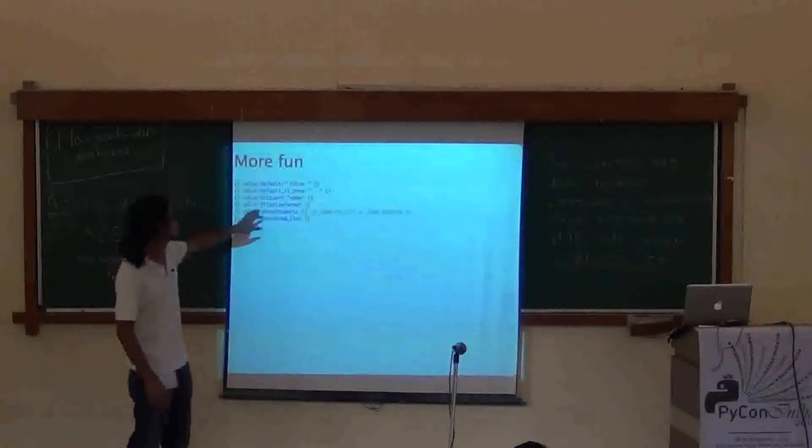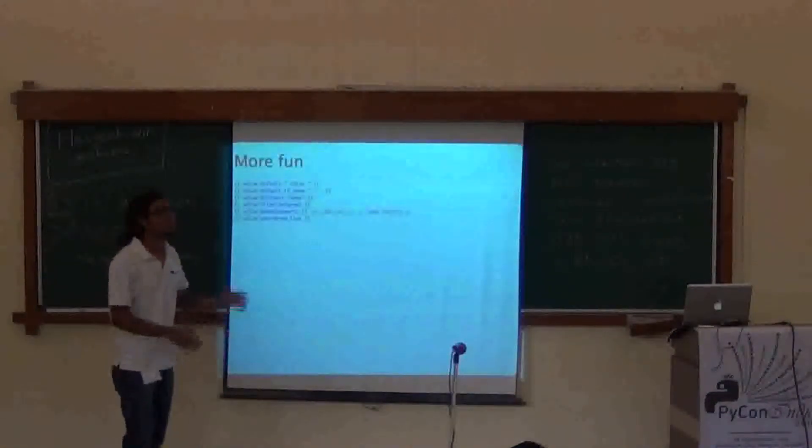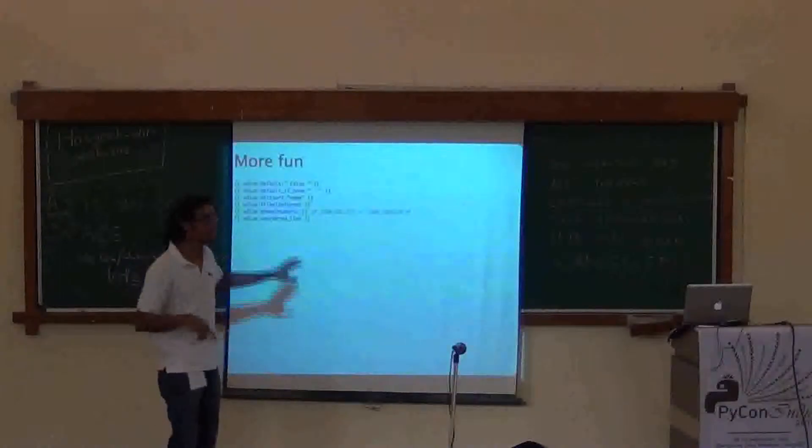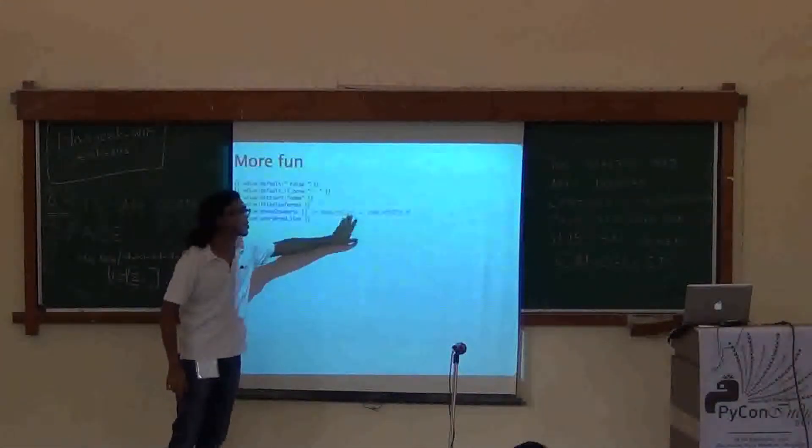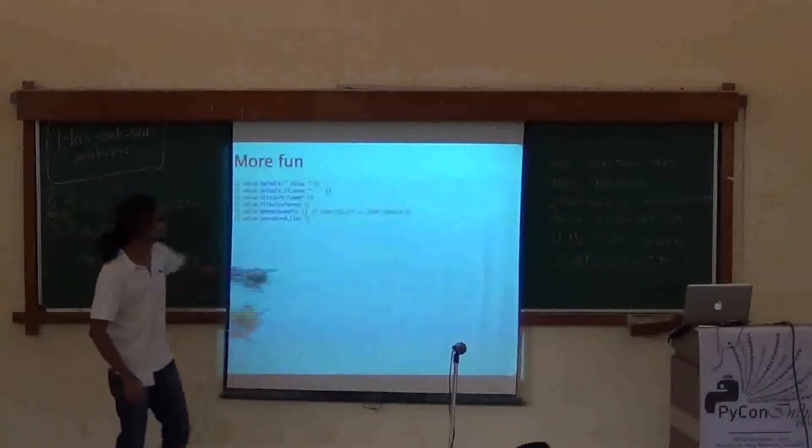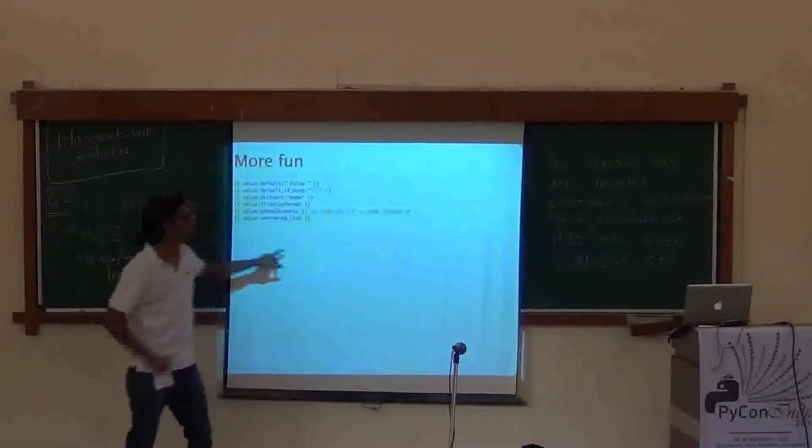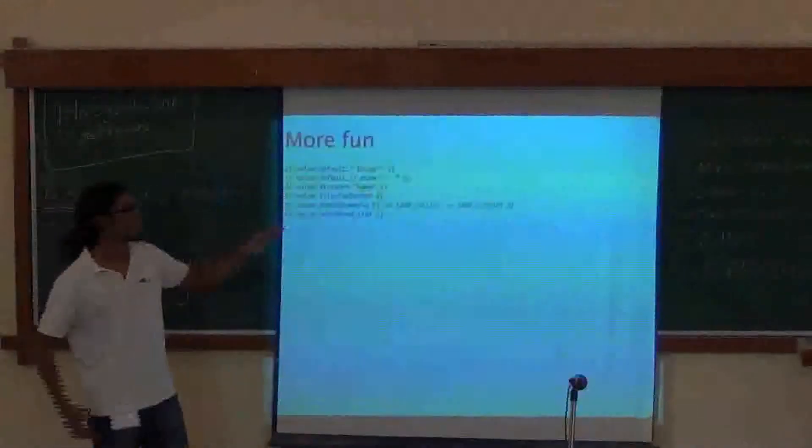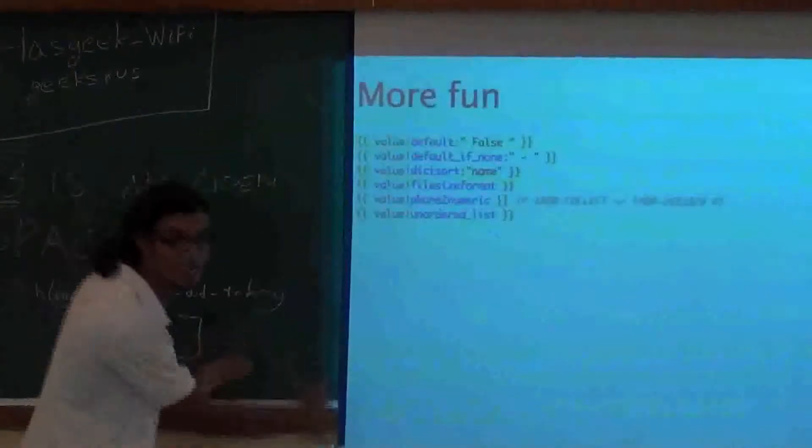Similarly, default is for false values. Dict sort is quite helpful. Say if you have a list of dictionaries, and that dictionary has a key called name, and if you want to sort by the value of name, this is how you do dictionary sorting. This is very interesting one, phone2numeric. So if you have a phone number with letters, you know how this works. If you open your phone, and if you type the letters as it is there, this is the number which gets dialed. Unordered list is, if my value is a list inside a list inside a list, it will get rendered as UL-LI, so it will be rendered something like a list, and then second level of list, and third level of list.